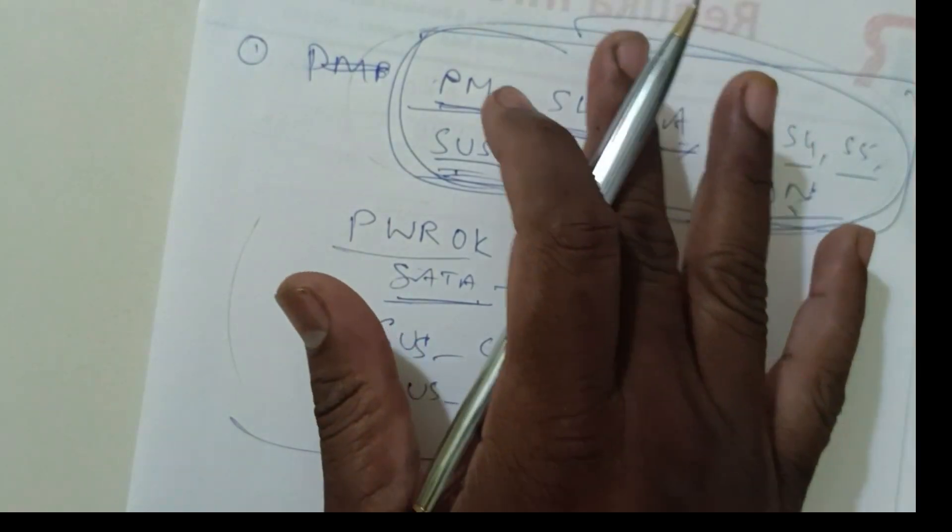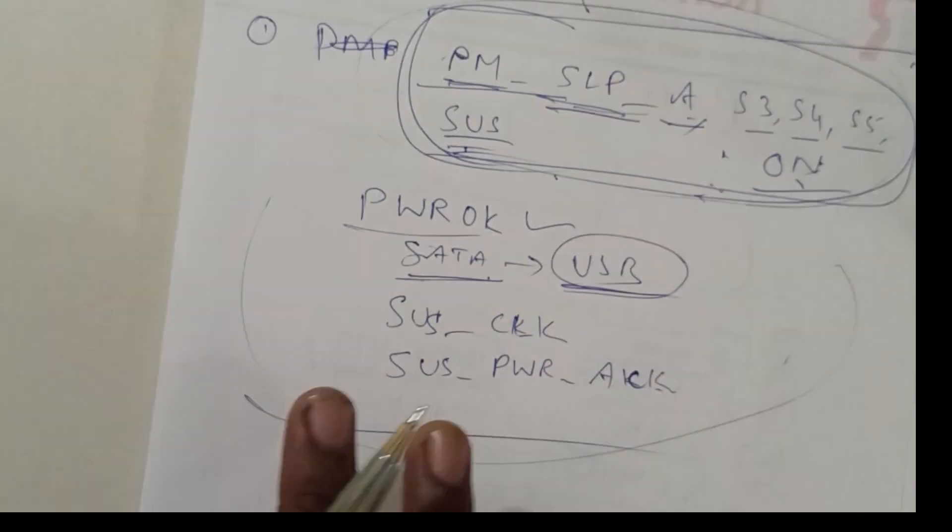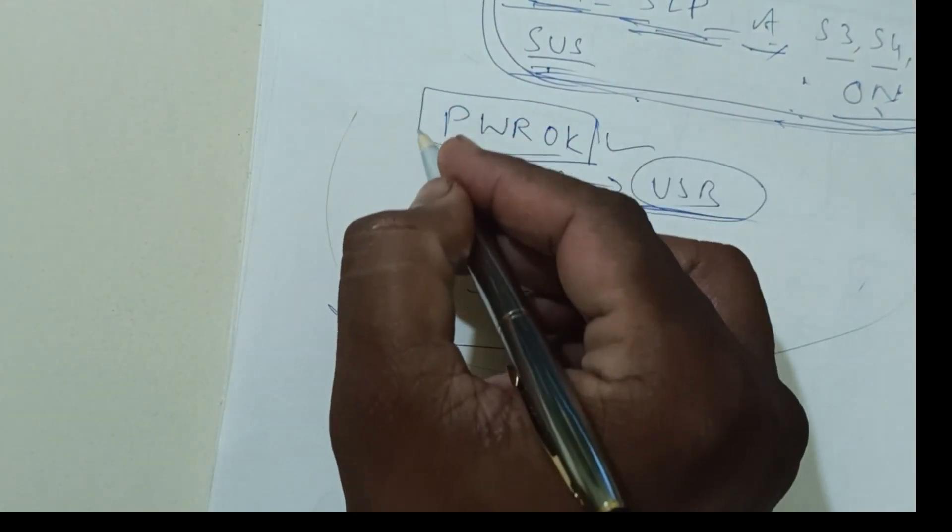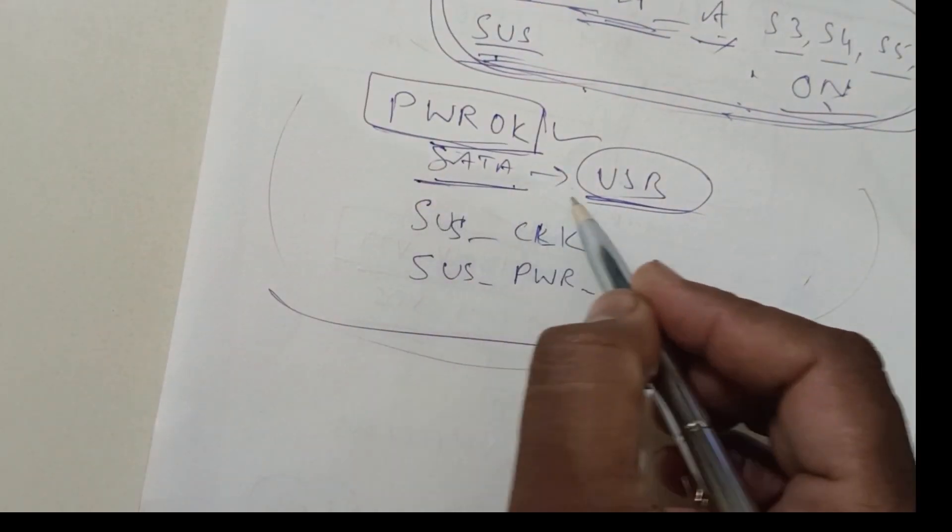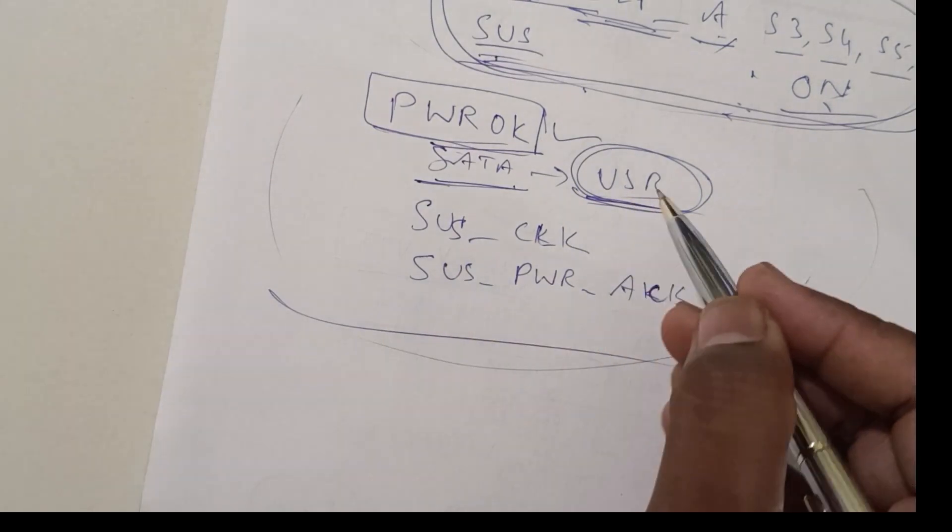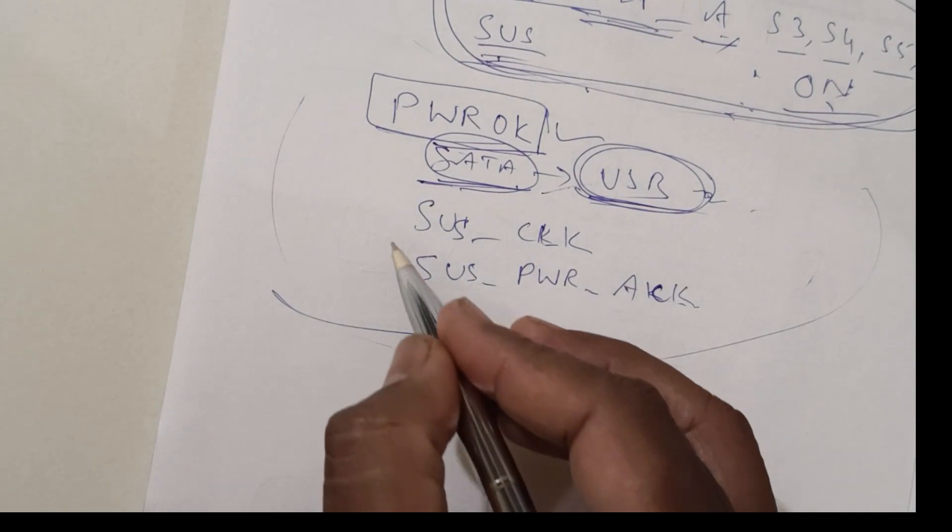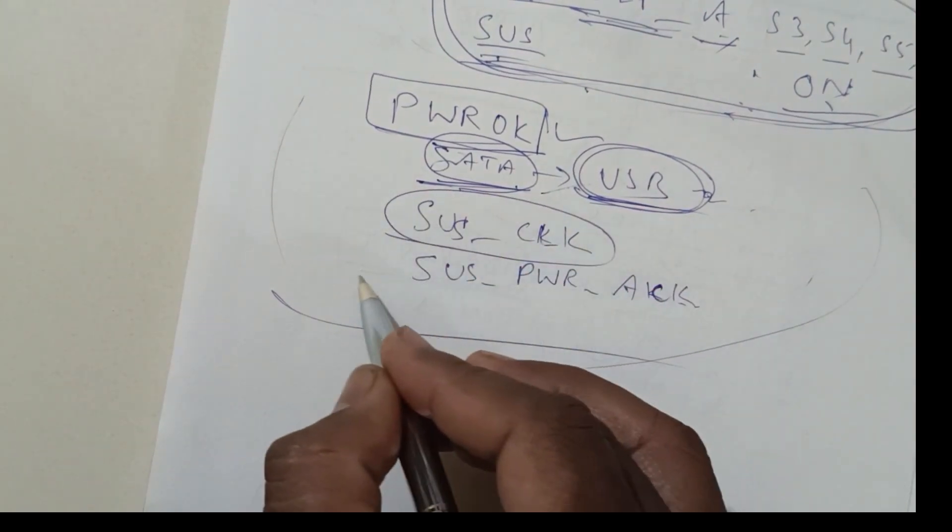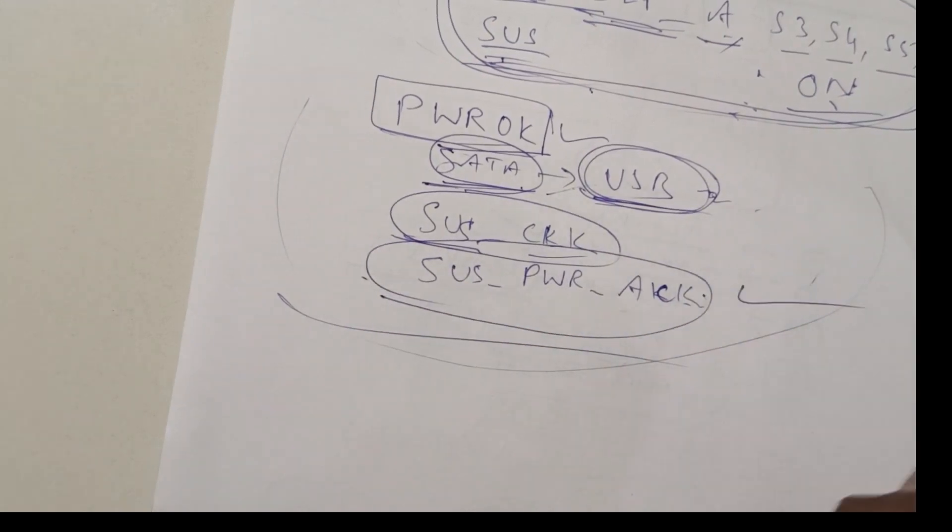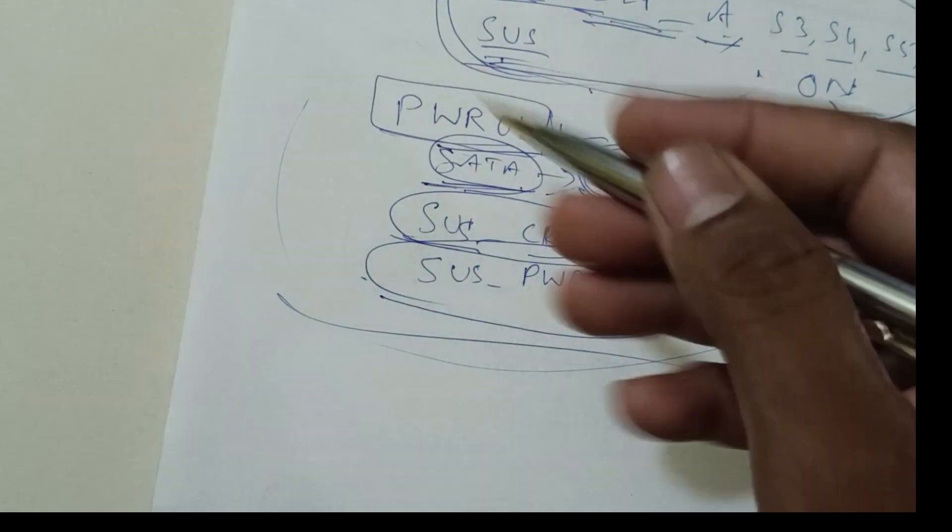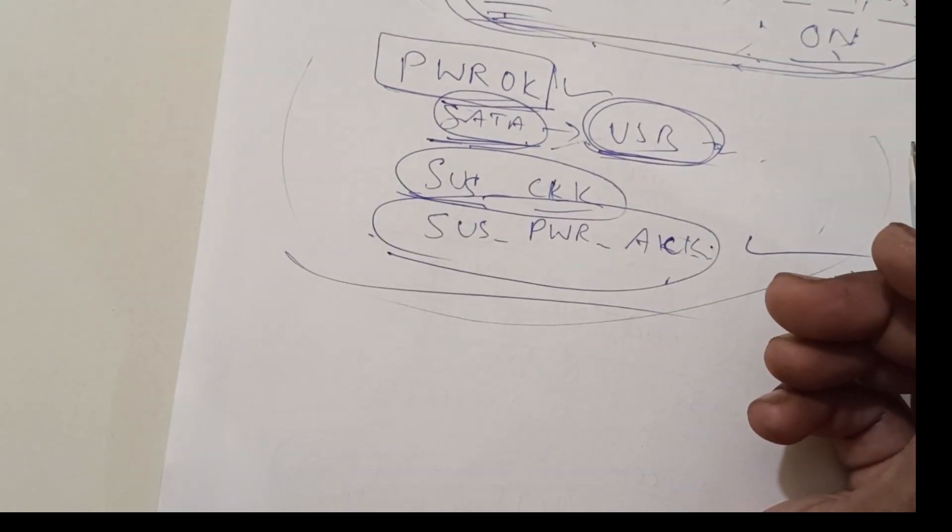These all come in the beginning stage. Using this only, board gets on. These are common in maximum number of PCH. And power OK almost is the final stage of S0. As I told, it controls all USB, USB 2 or 3 whatever it may be, SATA, SUS clock. This is suspend clock, SUS power acknowledgement. If this one comes, next voltages will generate as per the command, IO commands.